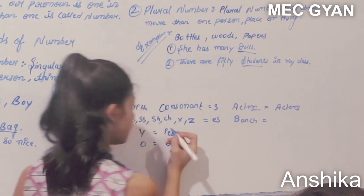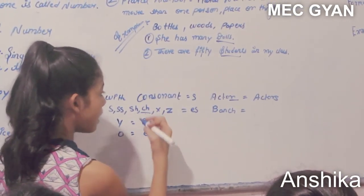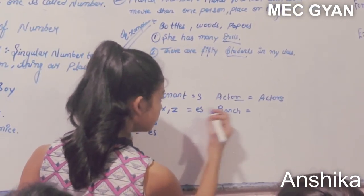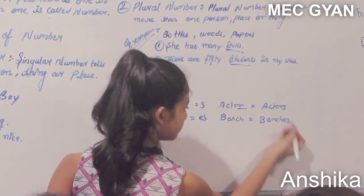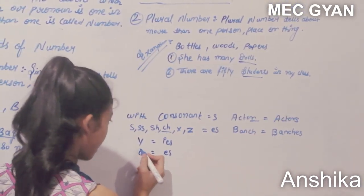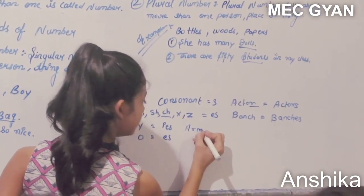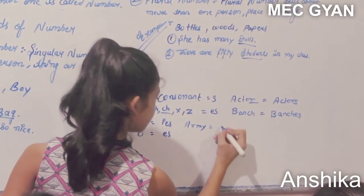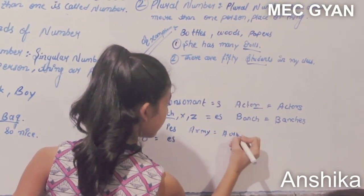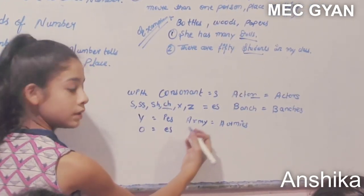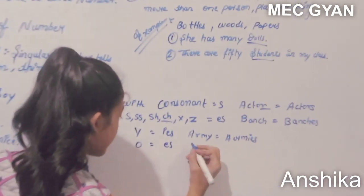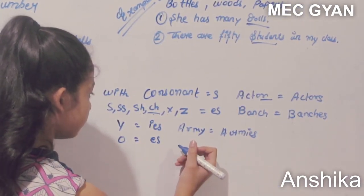With CH, we do like this: bench becomes benches. With Y as in army, we change it like this: army becomes armies. With O as in hero,